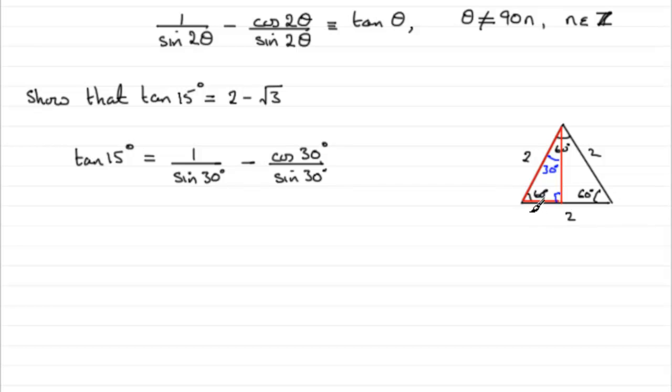And we have that this side on the bottom is 1 unit, this side is 2 units, and we can work out the third side by Pythagoras' theorem as being root 3.